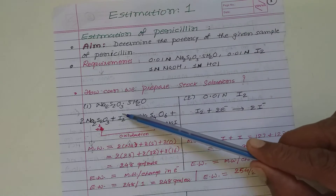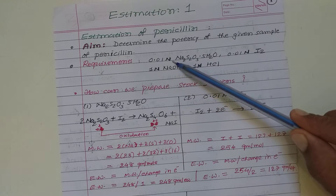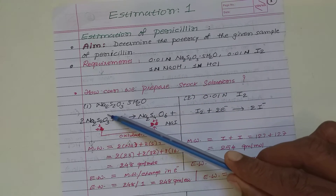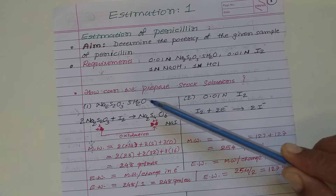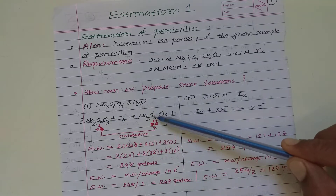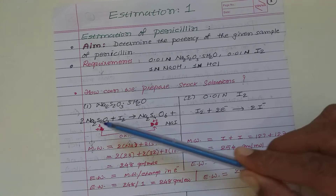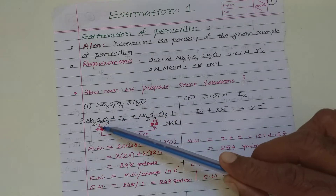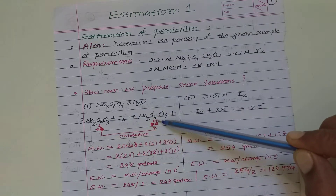First, Na₂S₂O₃·5H₂O. We want to prepare 0.01 normal solution. During the chemical reaction, S₂O₃²⁻ is converted into S₄O₆²⁻. The oxidation number of sulfur here is +2, and here it is 2.5. Multiplying by 2 gives 4, and multiplying by 2 gives 5. So during the chemical reaction, the change in oxidation number or change in electrons is only 1.